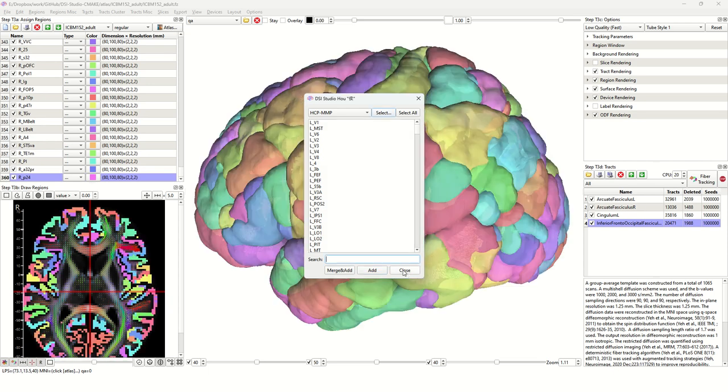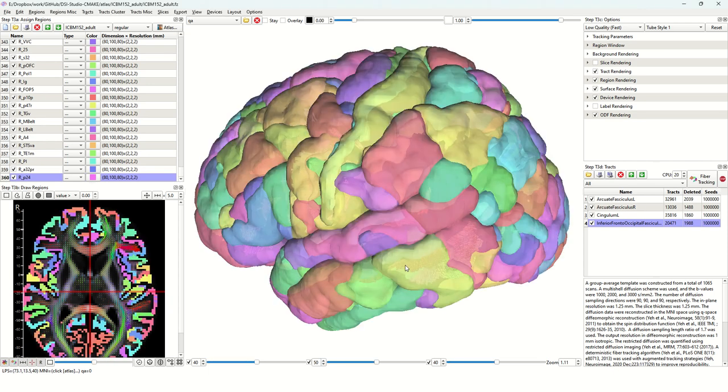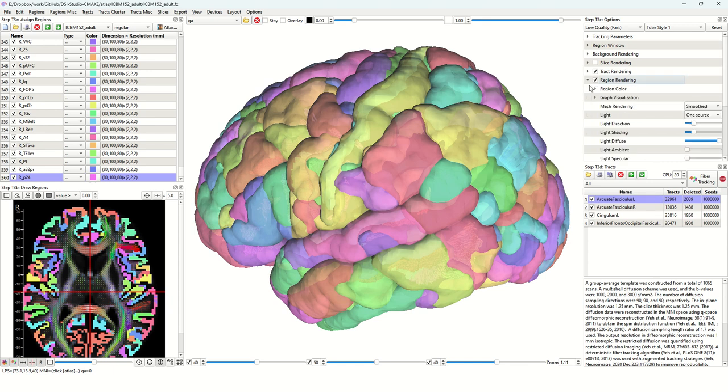Now we're ready to see how the tract-to-region connectome looks like. We select the first one, the arcuate fasciculus. Then let's go to the options under region rendering. Expand this, and there's a group called region color. If you're not seeing this, likely you're using an older version and you'll need to update DSS Studio.